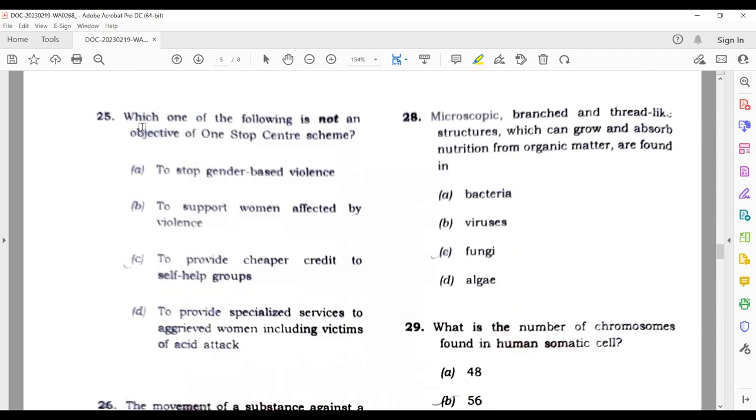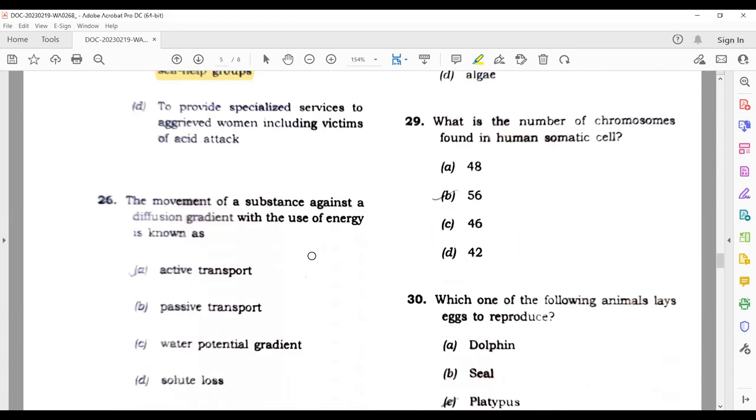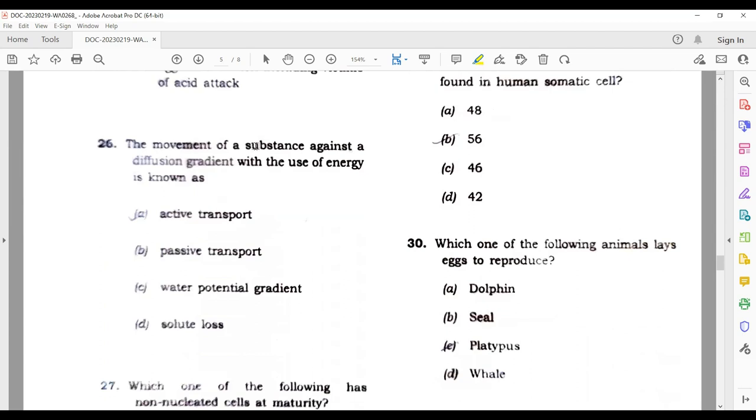Next question: which one of the following is not an objective of one-stop centers? Basically, the one-stop center is a scheme launched by the Government of India to prevent issues like acid attacks, gender-based violence, and to support women. But it is not going to help with credits. So this is your correct answer: to provide cheaper credits to self-help groups.